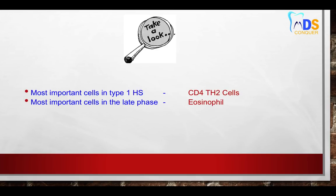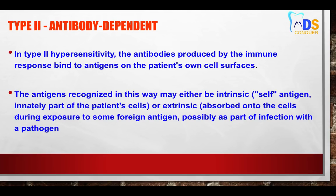The most important cell in Type 1 hypersensitivity is the CD4 TH2 cell, and the most important cell in the late phase of Type 1 hypersensitivity is the eosinophil. These are two very important MCQ points.